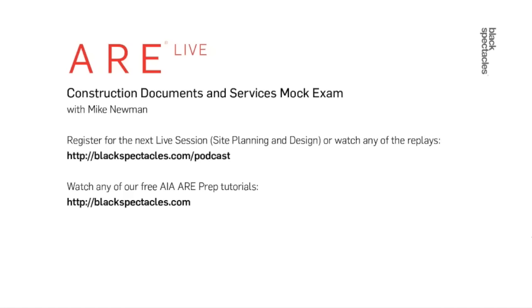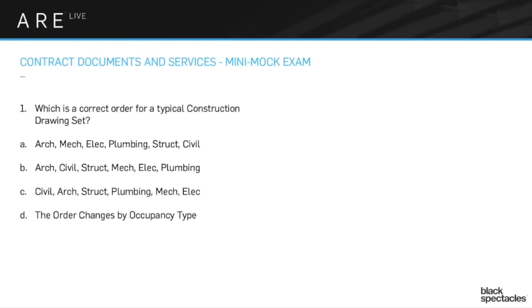Let's start with the first question. Which is the correct order for a typical construction drawing set? The four choices are: A — architecture, mechanical, electrical, plumbing, structural, civil; B — architecture, civil, structural, mechanical, electrical, plumbing; C — civil, architecture, structure, plumbing, mechanical, electric; and D — the order changes by occupancy type.